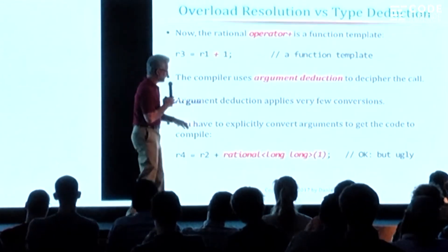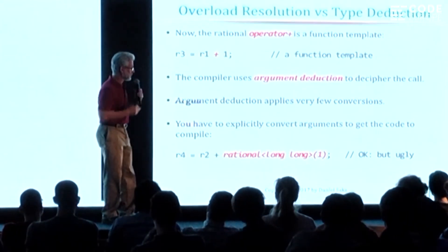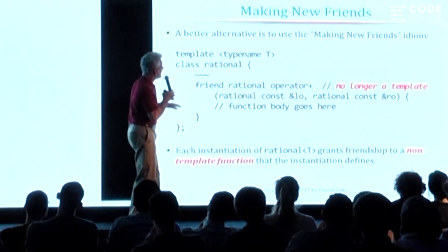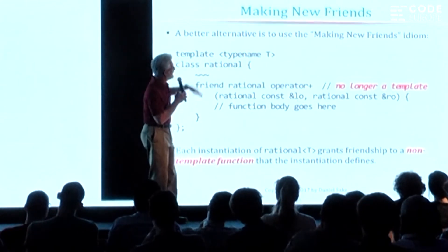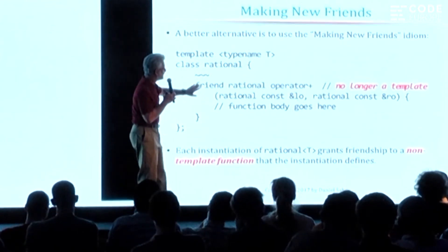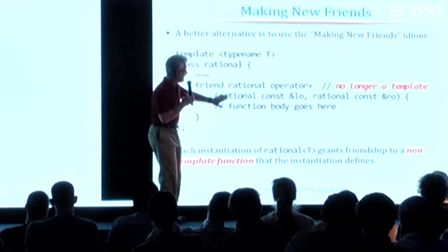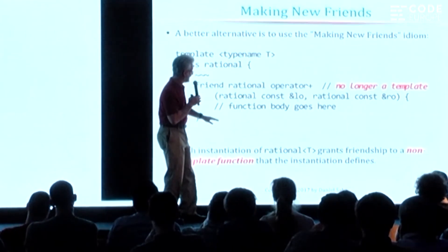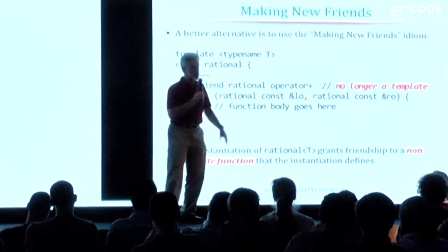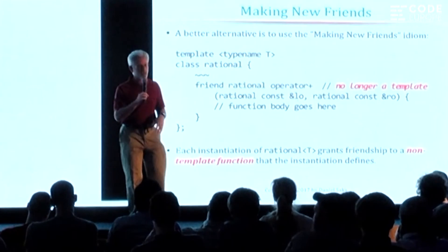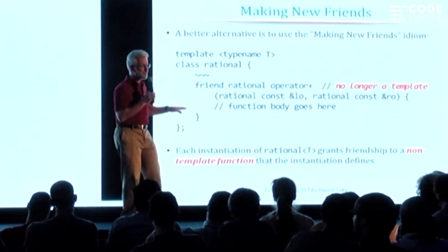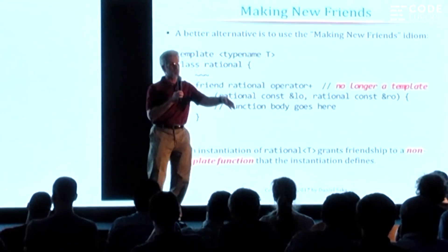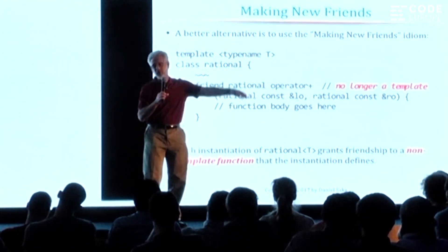So we don't want to have to do this — we'd like a way of solving the problem another way. There is a programming idiom called the 'making new friends' idiom, which involves taking a non-member function like this and not only declaring it but defining it inside the class. What you'll find is that the magic of making new friends is that it shifts the plus operator away from template argument deduction back into overload resolution, and then you get the conversions that you want back.